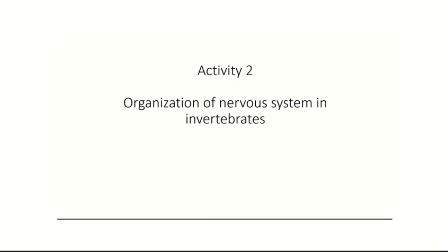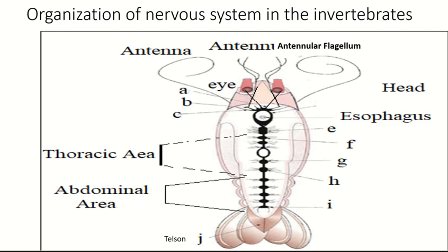Hello guys, today we will explain activity 2 in chapter 4, which is the organization of the nervous system in invertebrates. We will talk today about the shrimp — the organization of the nervous system in shrimp. As you know, the shrimp is one of the most important invertebrates.